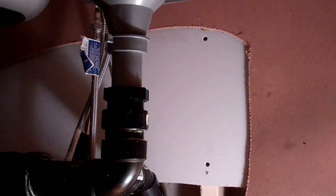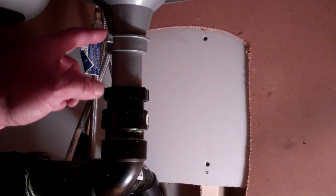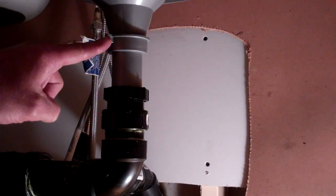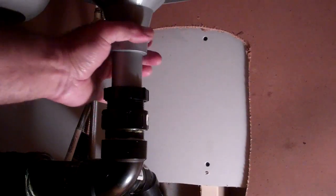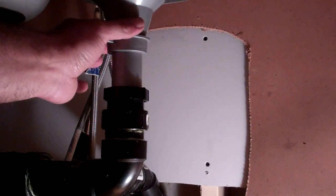In this video, I'm going to replace a tailpiece on a sink, and the tailpiece is this part here. It screws up onto the bottom of the output of the sink.